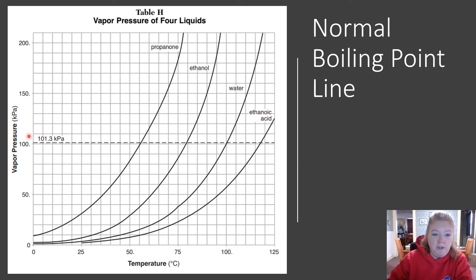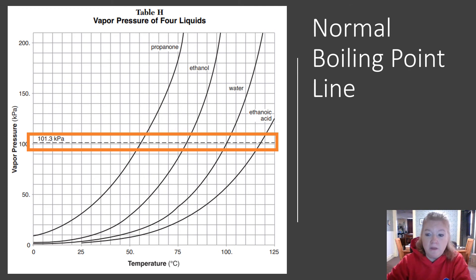There is a normal boiling point line at standard pressure, 101.3 kPa. If I wanted to find the normal boiling point of propanone, I go where this dotted line crosses propanone, go down, and read the temperature.